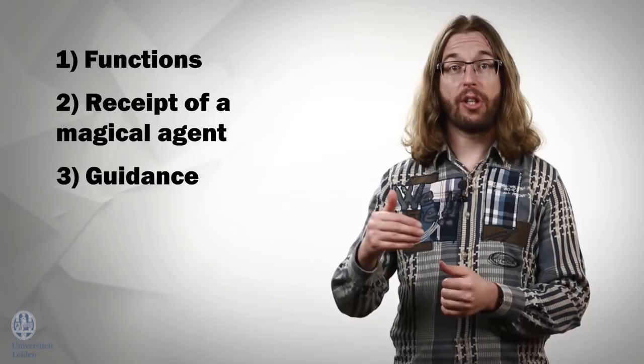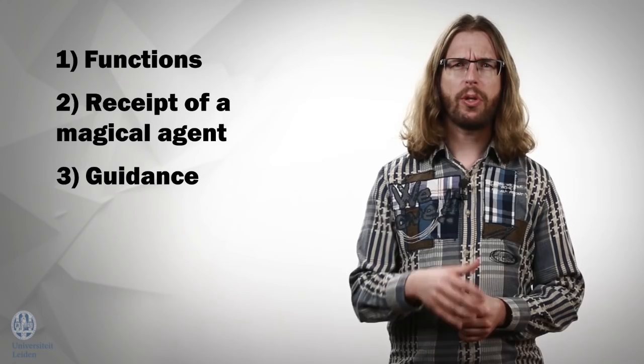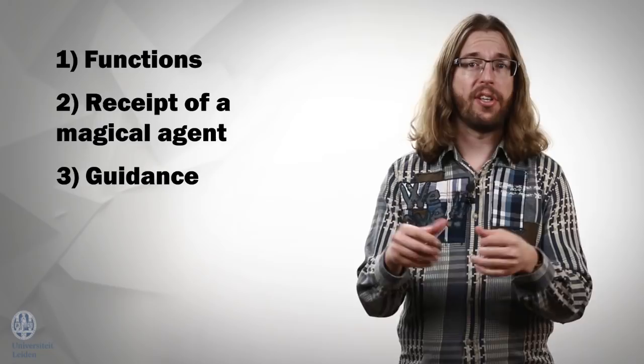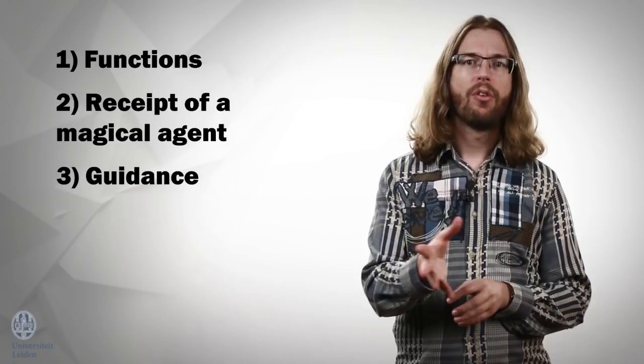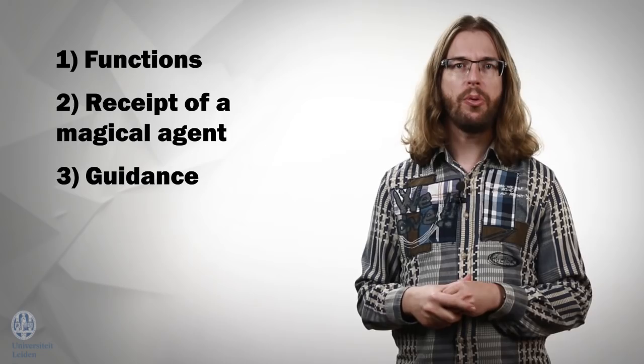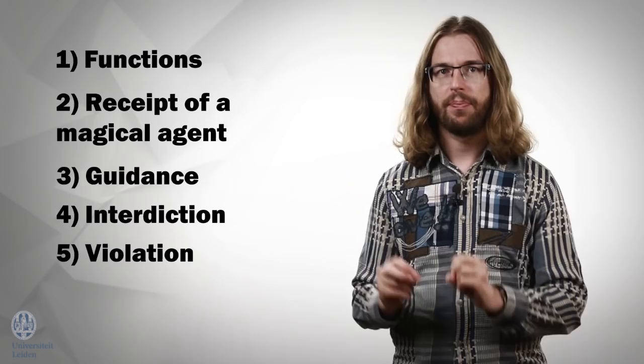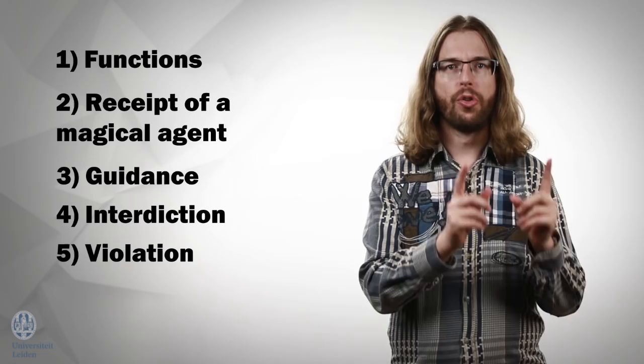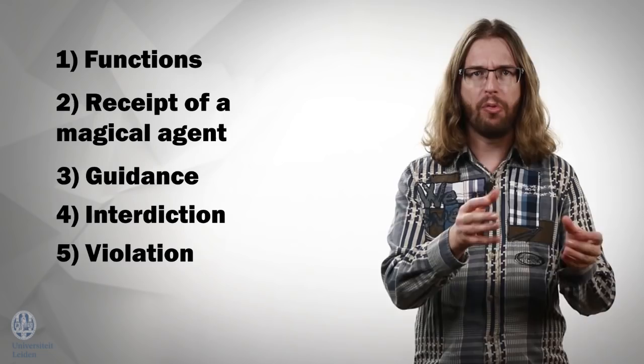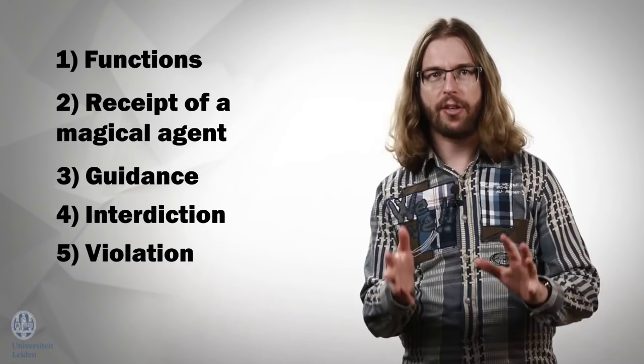But now I want to look at two others, because they will help to illustrate that Propp doesn't just identify these 31 functions, but also gives us very clear rules for how they can be combined. The two functions I want to look at are interdiction and violation. Interdiction is a scene in which the hero is warned not to do something. For instance, before the hero approaches the wood of darkness, he is warned never to stray from the path, because that would spell disaster. Or the hero is given a magical boat, but he is warned never to fall asleep while he is in it.